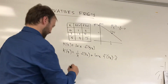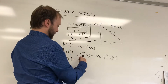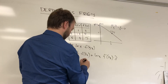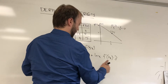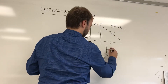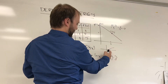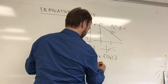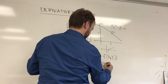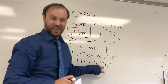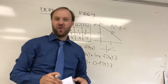If they ask you to find k prime of 1, substitute 1 everywhere. One over 1 is 1, so that's 1 times f of 3. Plus ln of 1 — and remember, the natural log of 1 is 0. So it's going to be 0 times 3 times f prime of 3. Because of the zero, that whole term drops out, and you just have f of 3.